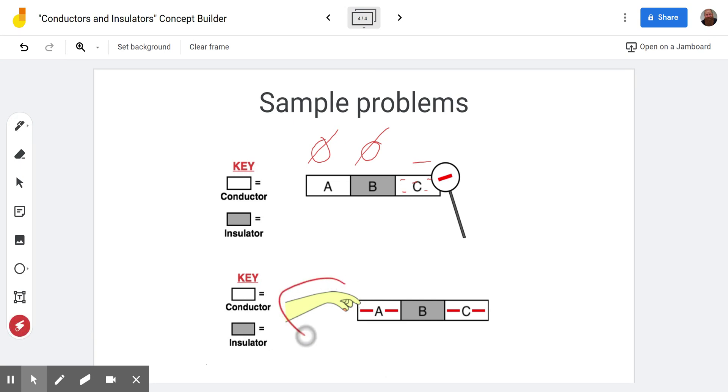In the second example down here, we've got a grounding example. You can see the person touching A. They're connected to their body, that means the electrons can flow into the earth or from the earth into the object. In this case, because we have negatives here, they're going to want to spread out away from each other, so those electrons are going to flow into the earth, and that's going to leave behind a neutral object.